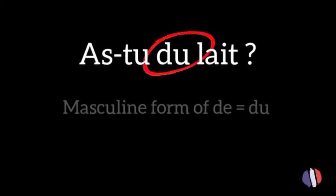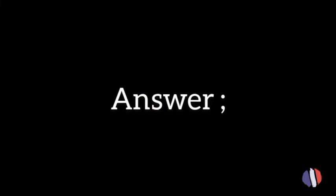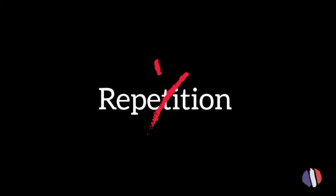Let's take one last example: 'Do you have some milk?' Here you can see the form du (de + le) is being used. We would answer: 'Oui, j'en ai,' which means 'Yes, I have some.' Here I also avoided repetition by using en.